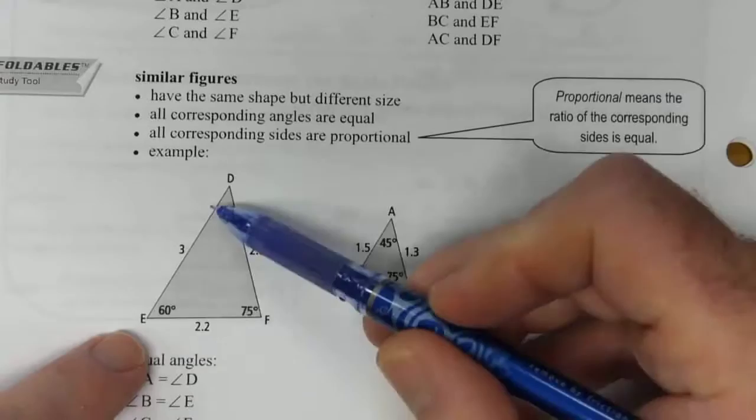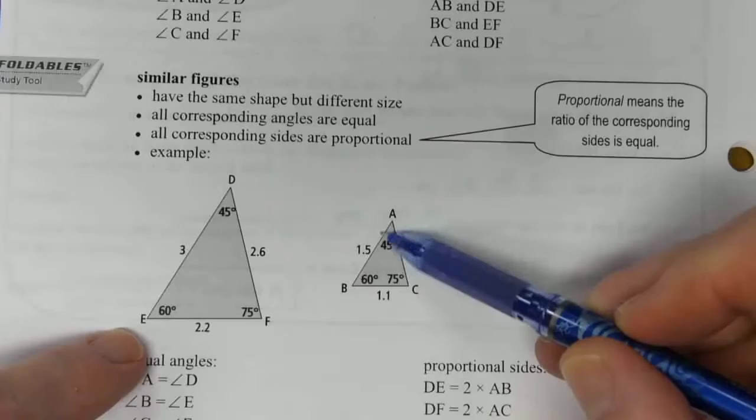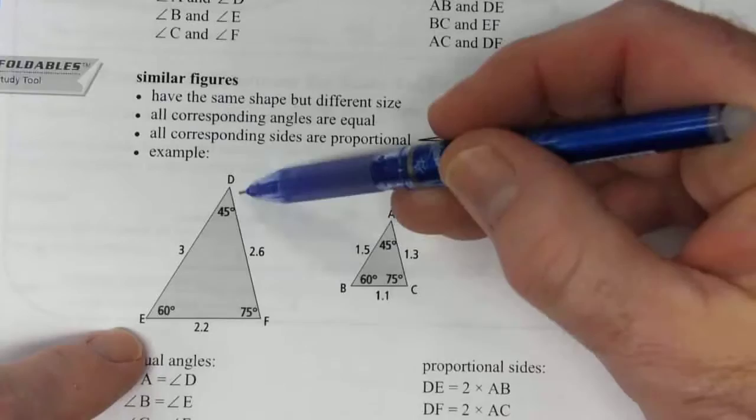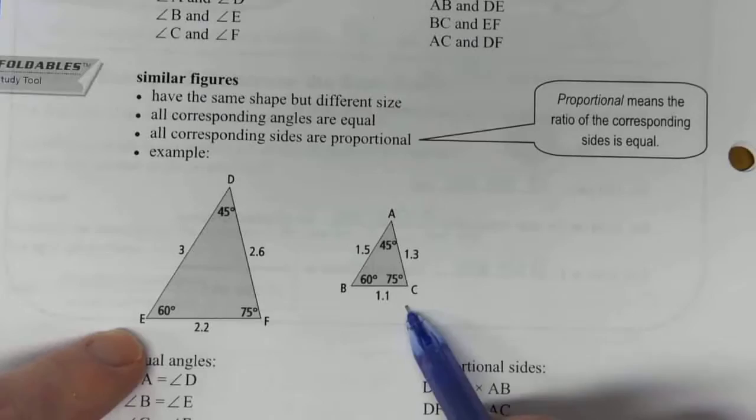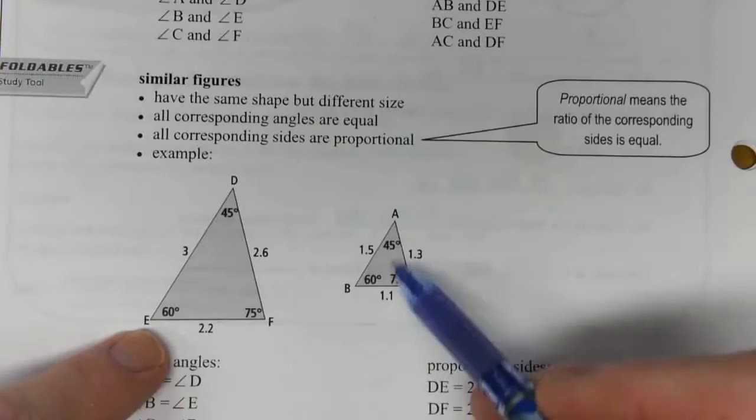So if you notice here E to D is a length of 3 on this triangle and it's 1.5 on A to B on this one. So it's twice as big. And then if you look at the other numbers, 2.6 is twice as big as 1.2, and then 2.2 is twice as big as 1.1. So this triangle is twice as big as this one, and all of your angles match as well. So we know that these are similar triangles.